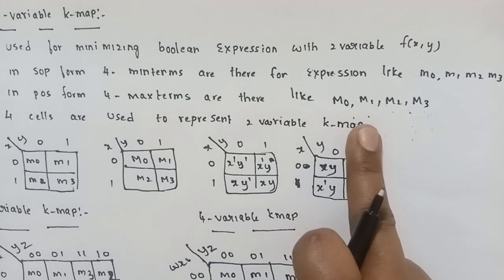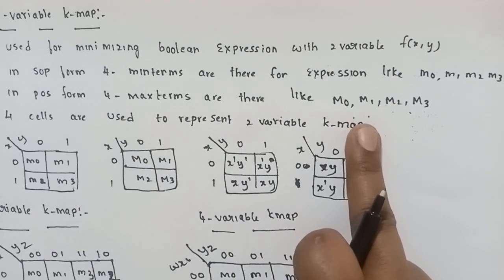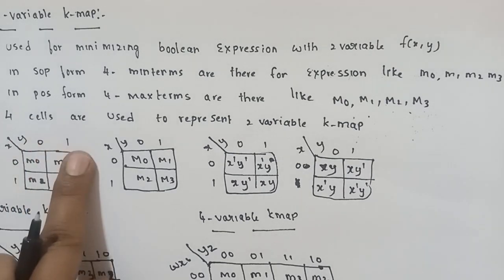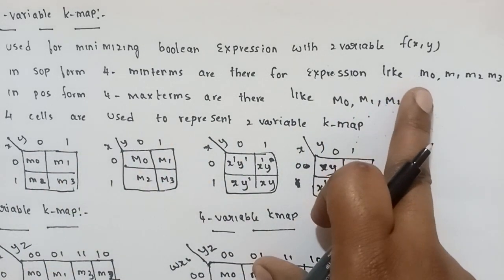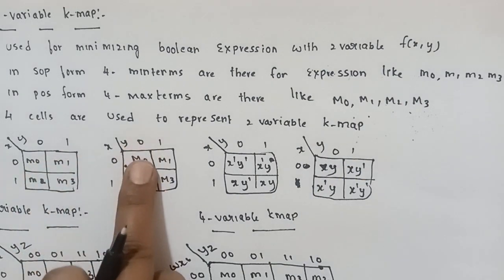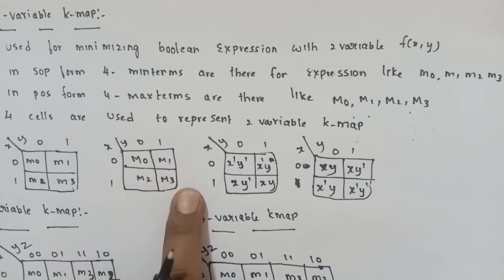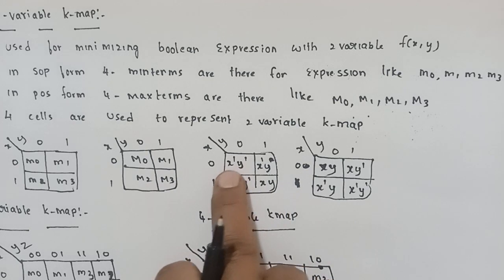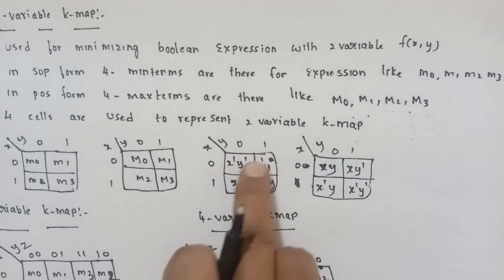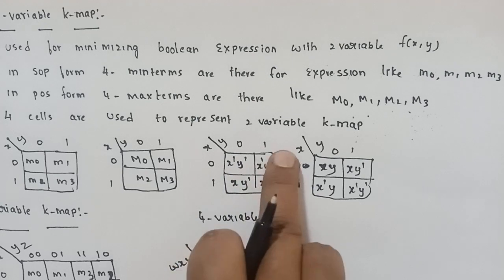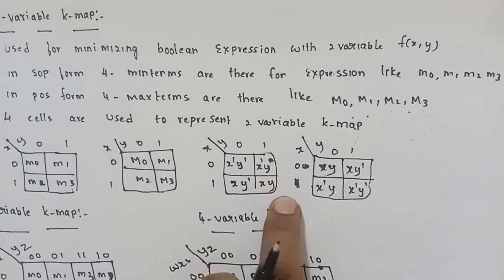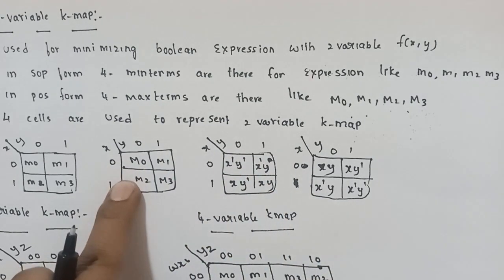Four cells are used in the two-variable K-map. One side is X variable, the other side is Y variable. X has values 0 and 1, Y has values 0 and 1. The first cell is x=0, y=0, which is min term x'y'. Next cell is x=0, y=1, which is x'y. Then x=1, y=0, which is xy'. This is the min terms and max terms representation for the two-variable K-map.